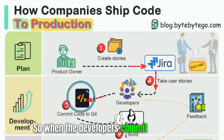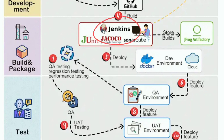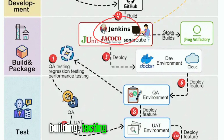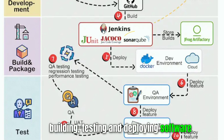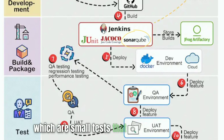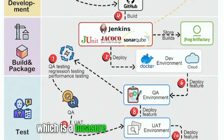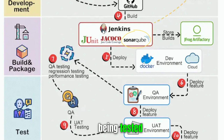When the developers commit their changes to the Git repository, that will trigger a build in Jenkins. Jenkins is a tool that automates the process of building, testing, and deploying software. It will run unit tests on the code, which are small tests that make sure the code is working correctly. It will also check the code coverage, which is a measure of how much of the code is being tested.